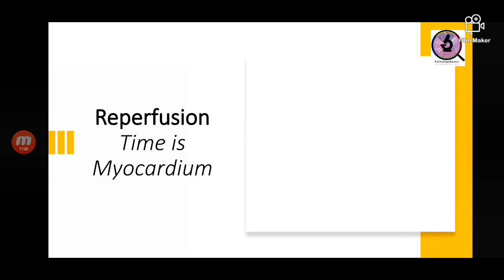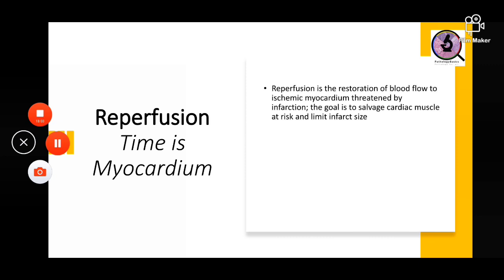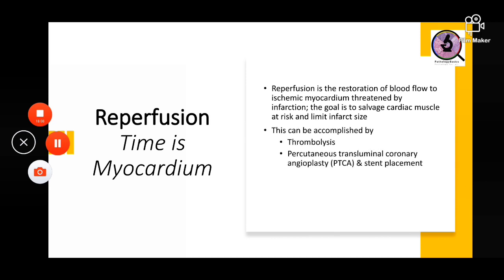From the microscopic and gross changes we learn that time is myocardium — the myocardium can be preserved if interventions are done within a certain time frame. Within 30 minutes we can prevent irreversible injury. After that, some amount of myocardium can still be salvaged if therapy is given. Reperfusion can be achieved by thrombolysis, PTCA (percutaneous transluminal coronary angioplasty) with stent placement, or CABG.